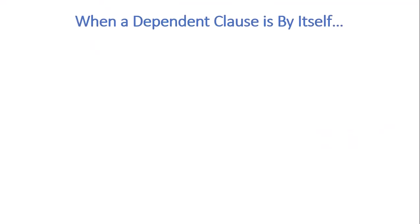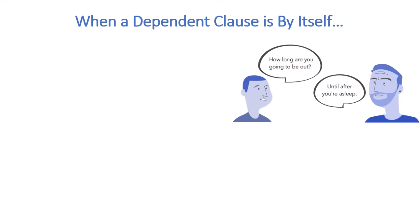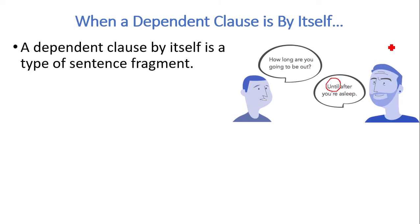So when a dependent clause is by itself. In dialogue, when we talk to each other, it's a little bit different. How long are you going to be out? Until after you're asleep. Well, this sentence is actually a dependent clause. We have our subordinating conjunction right there with the word until. But because he's asked a question, because the other man is answering the question, probably if we were actually talking, there would be other things like eye contact and body language that would convey the meaning. But in writing, it's a tiny bit different.